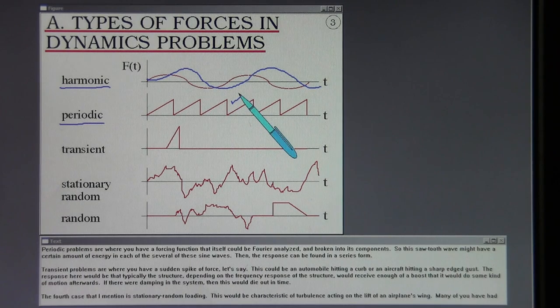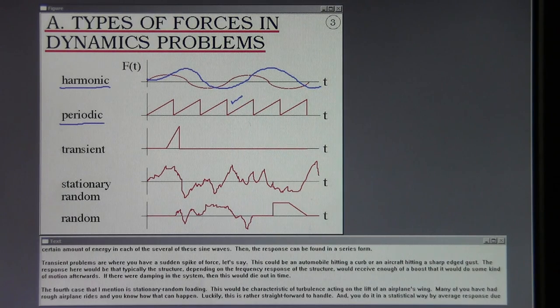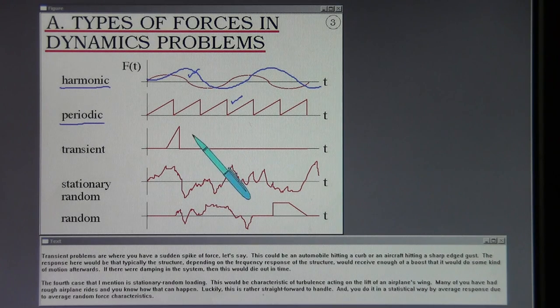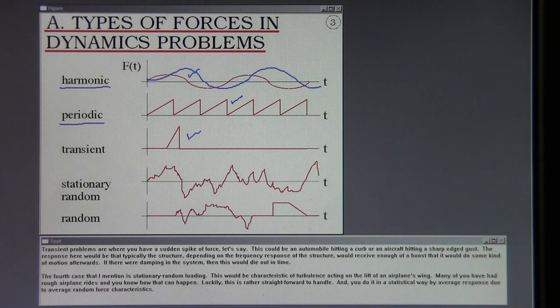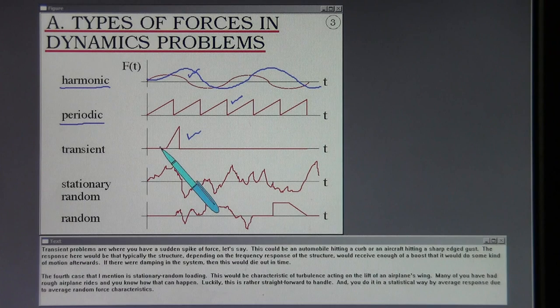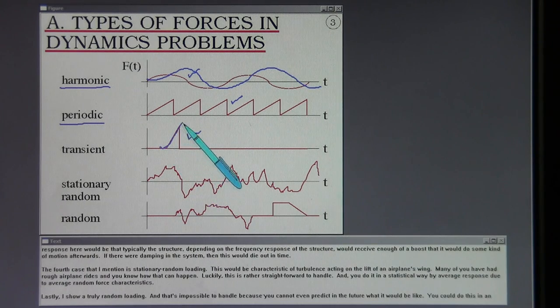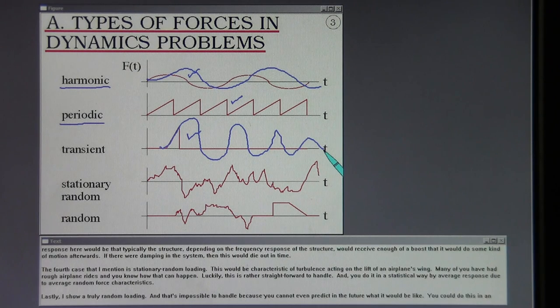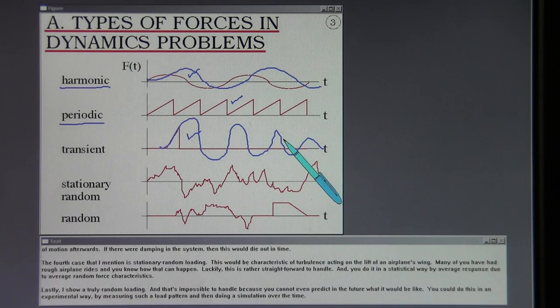Transient problems are where you have a sudden spike of force. This could be an automobile hitting a curb or an aircraft hitting a sharp-edged gust. The response here would be that typically the structure, depending on the frequency response of the structure, would receive enough of a boost that it would do some kind of motion afterwards. If there were damping in the system, then this would die out in time.